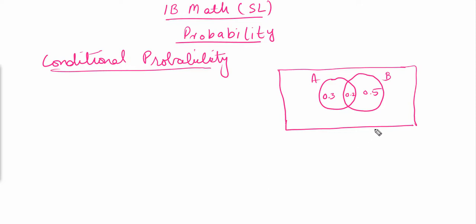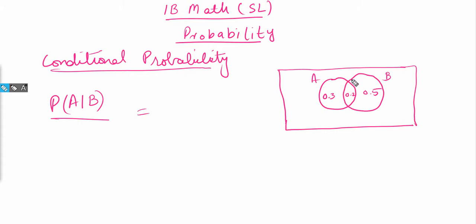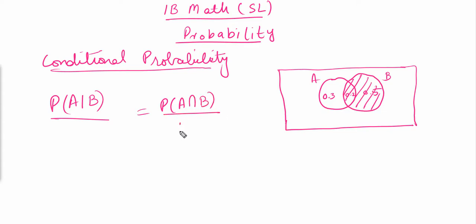To discuss conditional probability, consider this diagram where two events are not mutually exclusive — there is some overlapping portion. The conditional probability of A given B is written as P(A|B). It means we find the probability of A within the event of B. Our total outcomes will be the region of B, and within that we look at what probability of A exists, giving us: P(A|B) = P(A ∩ B) / P(B).